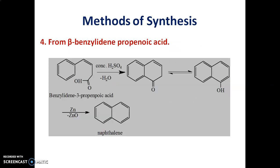Fourth method for synthesis of naphthalene is from beta-benzylidine-propanoic acid. The starting material is beta-benzylidine-propanoic acid which reacts with concentrated H2SO4 to give tetralone. This tetralone on further reduction with zinc gives naphthalene.